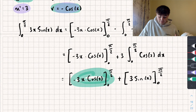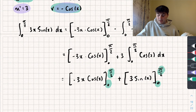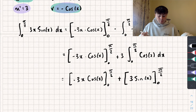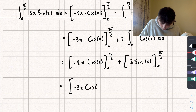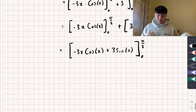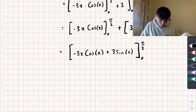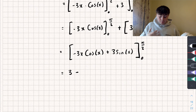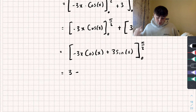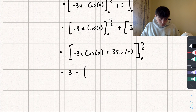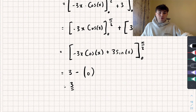Here's the nice trick: because we're evaluating both parts between the same limits, we can push them together and evaluate at the same time. We rewrite this as [−3x·cos(x) + 3·sin(x)] between 0 and π/2. Substituting in π/2: −3·(π/2)·cos(π/2) + 3·sin(π/2) gives 3. Substituting in 0: −3·0·cos(0) + 3·sin(0) gives 0. So we subtract 0 and get a final answer of 3, which is quite a nice answer.